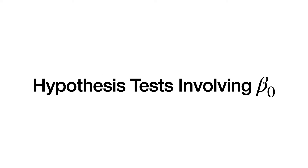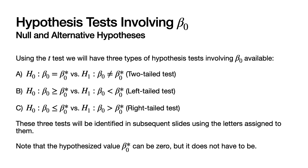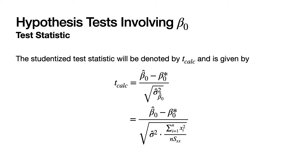Next, let's look at hypothesis tests involving beta_0. Again using the t-test, we have three types of hypothesis tests: a two-tailed test, a left-tailed test, and a right-tailed test, just like for tests involving beta_1. Note that beta_0 star, the hypothesized value of beta_0, can be zero but certainly does not have to be. The studentized test statistic T_calc equals beta_0_hat minus beta_0_star divided by the estimated standard error of beta_0_hat.